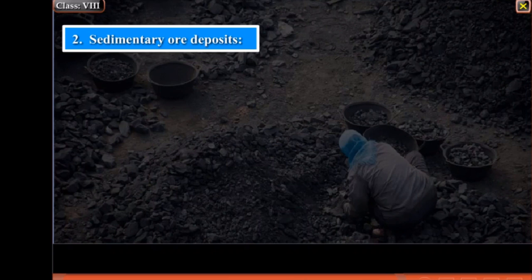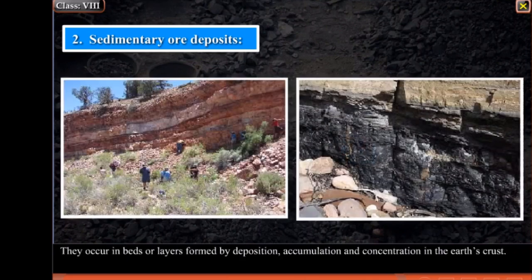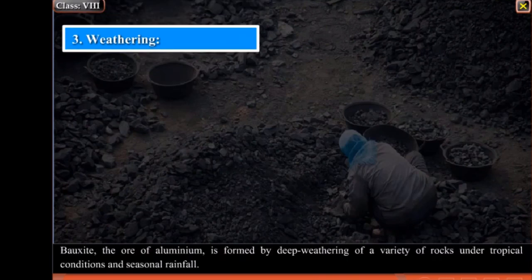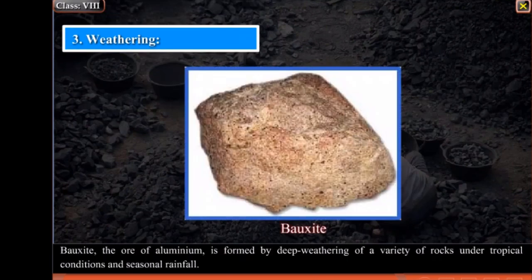Sedimentary Ore Deposits: They occur in beds or layers formed by deposition, accumulation and concentration in the earth's crust. Coal and some grades of iron ore are formed in this manner, as a result of long periods under heat and pressure. Weathering: Bauxite, the ore of aluminium, is formed by deep weathering of a variety of rocks under tropical conditions and seasonal rainfall.